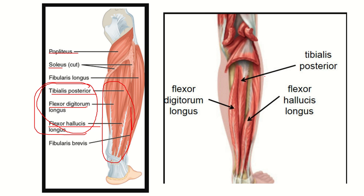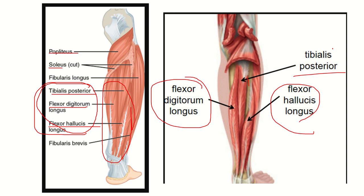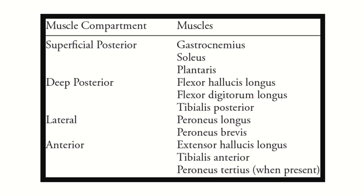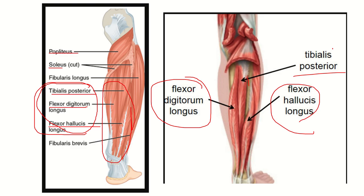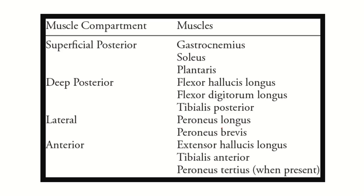In the second picture we can also see tibialis posterior, flexor hallucis longus, and flexor digitorum longus located in the deep posterior surface of the lower leg. Important vessels also pass through this area — the posterior tibial vessels and posterior tibial nerve are present in this compartment.